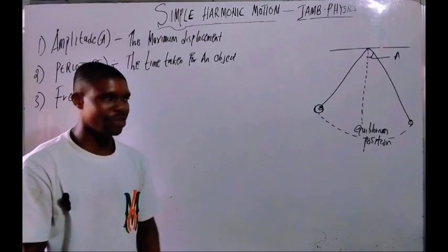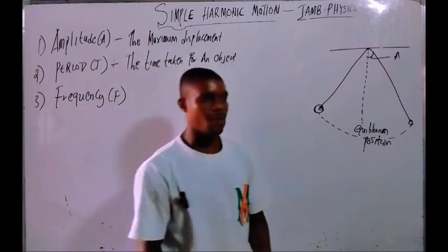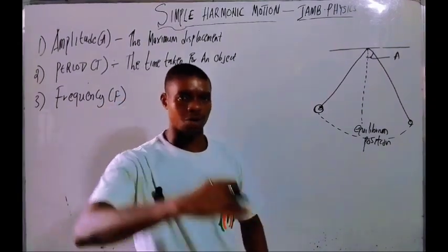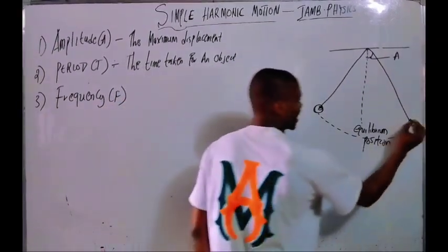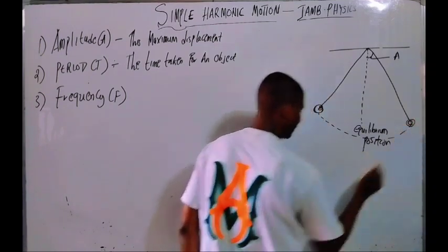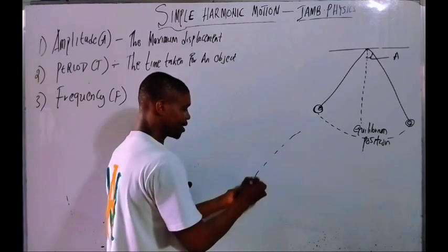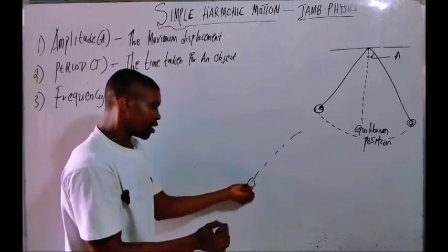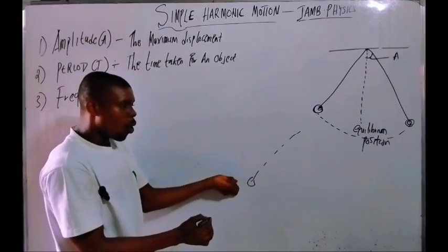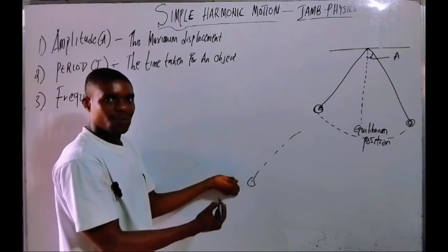What is period? Period is the time taken for an object to complete one cycle, one oscillation, or one vibration. Now when it comes to one cycle or one oscillation, if you displace the object here to the maximum displacement — which is the amplitude — then release it...